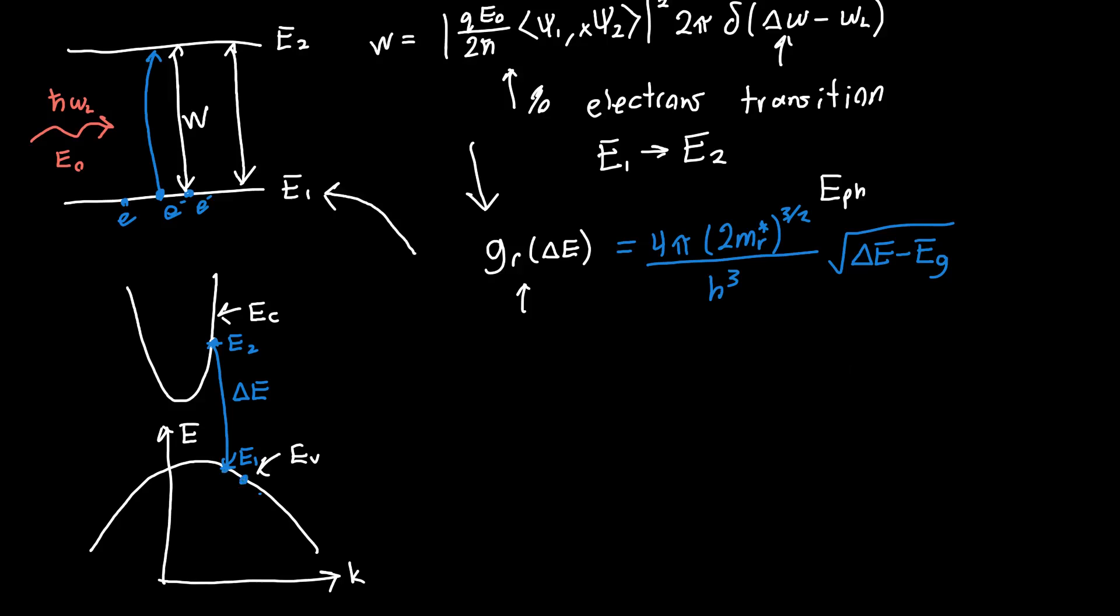And so now we know the number of electrons in every single one of these states E1. All we need to do is sum over all of these states. Or since they're so closely spaced together, we can just integrate over all of them. And so we're going to want to integrate from delta E equal to the band gap, because below that there's no states, to some energy, let's call that infinity, some energy that's far away from the edge. Our reduced density of states as a function of the energy separation times what we got from Fermi's golden rule, our percentage transition rate per unit time as a function of the energy separation integrated over the entire energy separation.